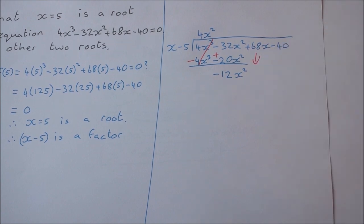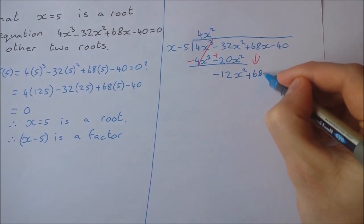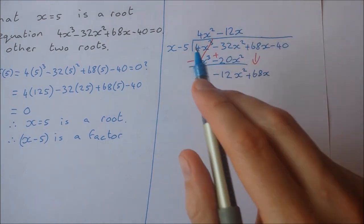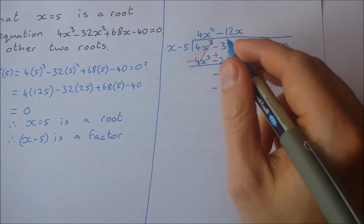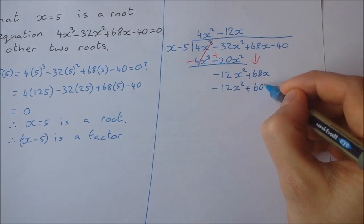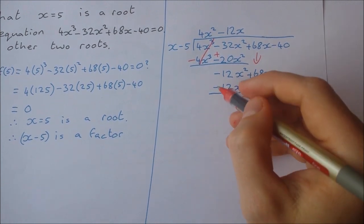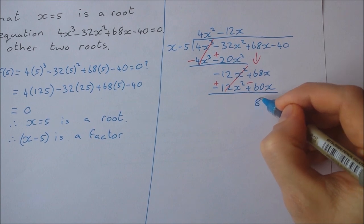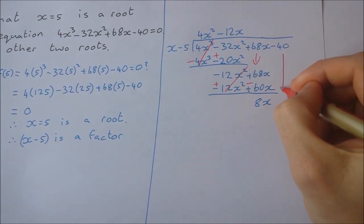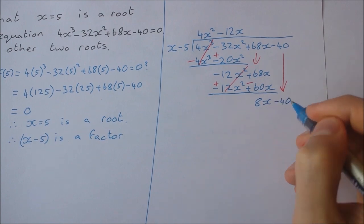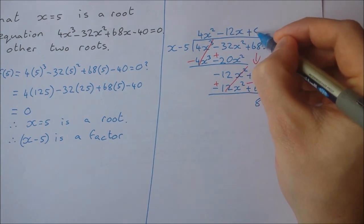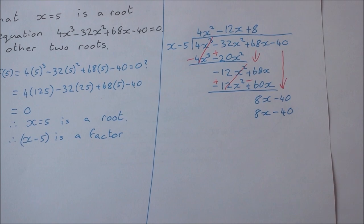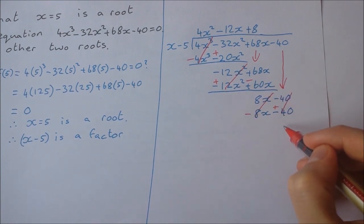Bringing down 68x: x into minus 12x squared goes minus 12x. Minus 12x by x is minus 12x squared, minus 12x by minus 5 is plus 60x. Subtracting by changing signs they cancel to 0, so 68 minus 60 gives 8x. Bring down minus 40: x into 8x goes 8 times. 8 times x is 8x, 8 times minus 5 is minus 40. Changing both signs, they all give 0.